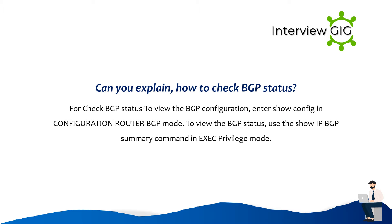Can you explain how to check BGP status? To check BGP status and view the BGP configuration, enter show config in configuration router BGP mode. To view the BGP status, use the show IP BGP summary command in exec privilege mode.